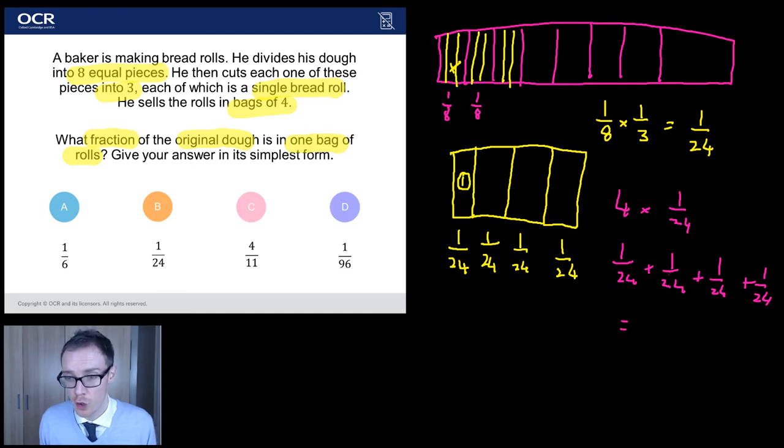I'll do the adding first. So 1 24th plus 1 24th is 2 24ths. Remember, you don't need to add the bottoms or anything like that. The denominators are the same. 3 24ths, 4 24ths. And 4 24ths, I think, simplify to 1 6th.